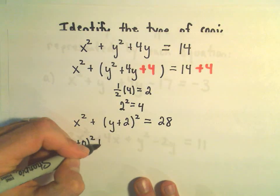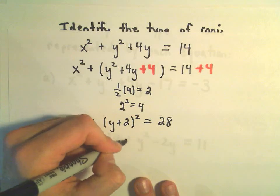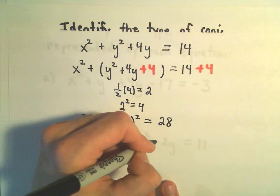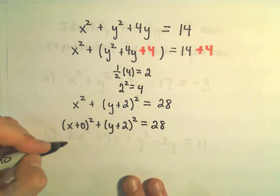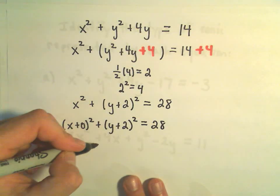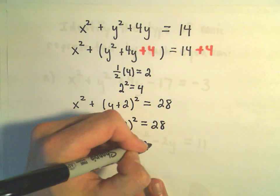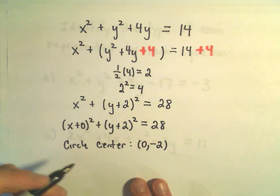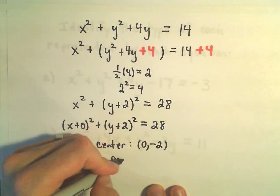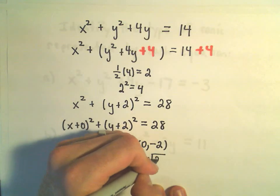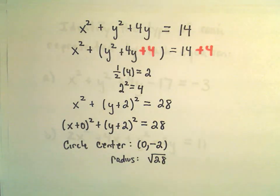We could write x plus 0 squared plus y plus 2 squared equals 28. This is just going to be a circle with a center of 0, negative 2. And it's going to have a radius of the square root of 28. Remember, you have to take the square root of the number.